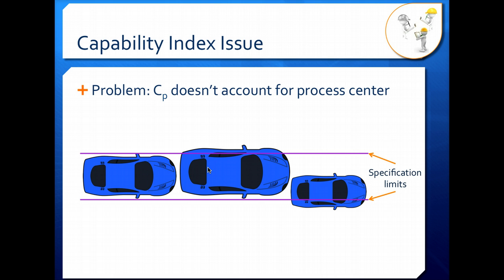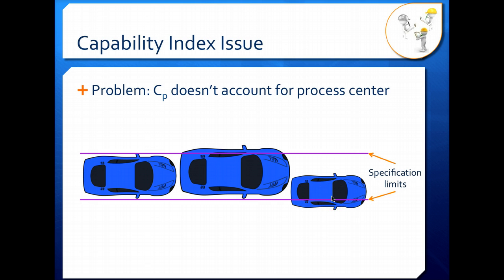There's a problem here: the capability index CP does not account for our process center. Looking at these three cars, the big car in the middle probably won't meet specification even if parked in the center. However, the car on the right is a skinny little subcompact that should fit within our specification limits just fine — but somebody did a terrible parking job, so the car is outside the specification limits. We wouldn't know that by just looking at CP, because capability index only looks at the ratio of tolerance to process capability. Since our tolerance is wider than our process capability, this little car seems to be in spec if we don't account for where the center line is.